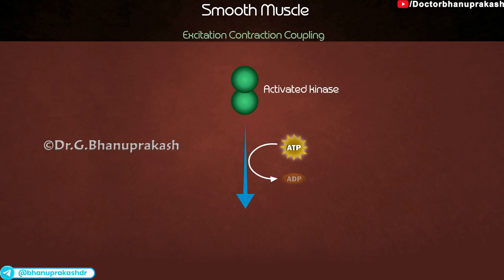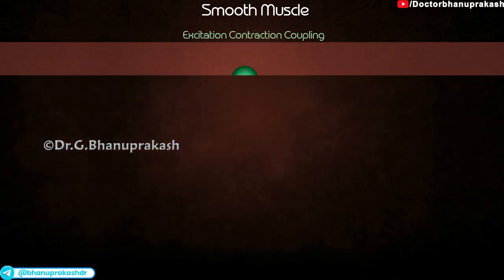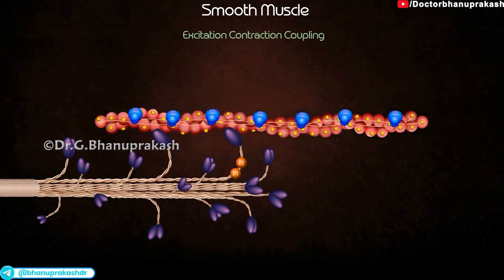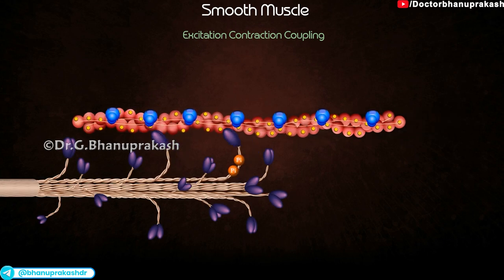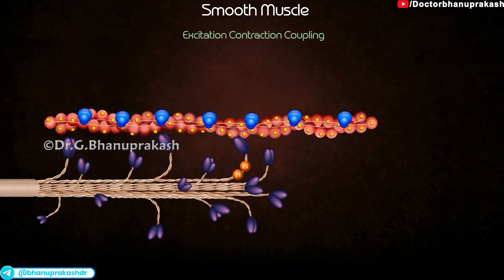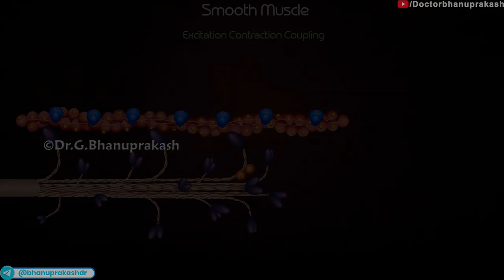The activated kinase enzymes catalyze the transfer of phosphate to myosin, activating myosin ATPases. Activated myosin forms cross-bridges with actin on the thin filaments, and shortening begins.